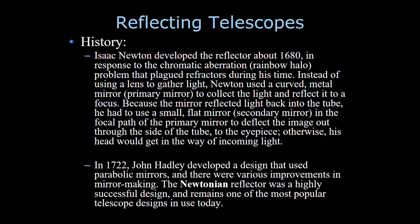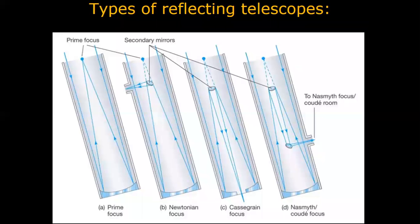Then in 1977, John Hadley developed a design that used parabolic mirrors, and there were various improvements in mirror making. Newton's reflecting telescope developed significantly after that. There are four types of reflecting telescopes.